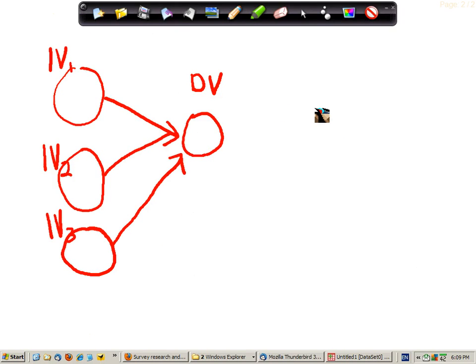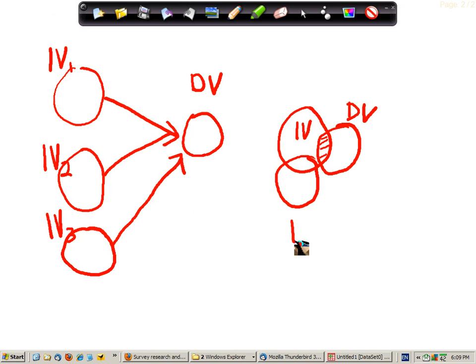As we'll see later in this tutorial, we can also depict these relationships using Venn diagrams. In this case, for example, this independent variable correlates with this dependent variable, and here we have an independent variable that correlates with the other independent variable but does not correlate at all with the dependent variable.